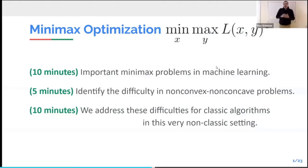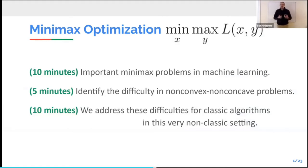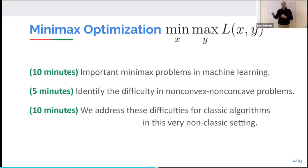The overall outline: we're thinking about minimax optimization, where we have some variables X that we're minimizing over and other variables Y that we're maximizing over. It's a really classic structure in game theory or robust optimization, but in recent years it's become really important in machine learning — neural network training and things like that. The new applications in machine learning are non-convex and non-concave, which really breaks all the classic theory we have about minimax optimization. I'll wrap up the talk by showing how we can still understand our classic algorithms in this very non-classic setting.